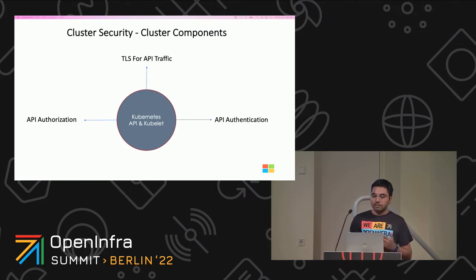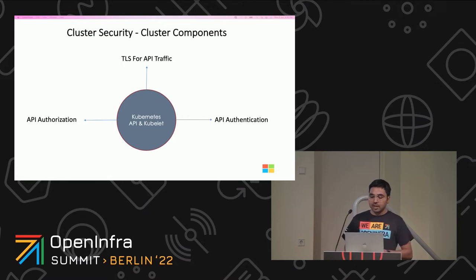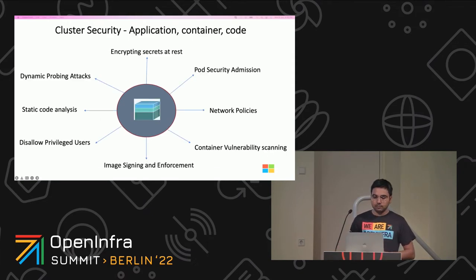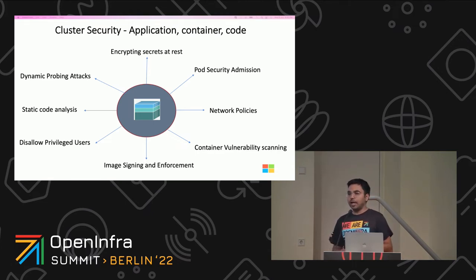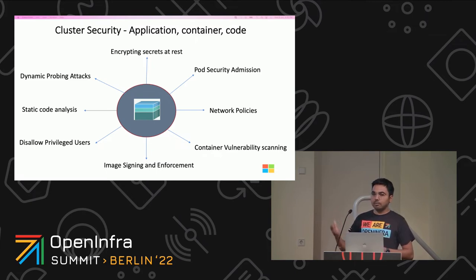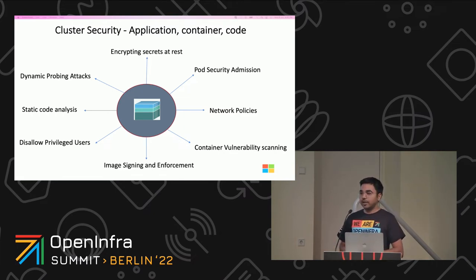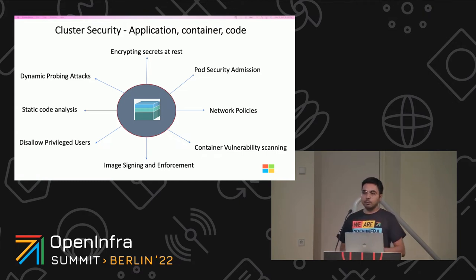Once authenticated, every API call is also expected to pass an authorization check. Kubernetes ships an RBAC component that matches an incoming user or group to a set of permissions bundled into roles. Simple and broad roles may be appropriate for smaller clusters, but as more users interact with a cluster, it may become necessary to separate teams into separate namespaces with more limited roles. These are some important things to consider within cluster security for application, container, and code — high priority items like encrypting secrets at rest, enabling pod security admission, enabling network policies, running tools for checking container vulnerability, image signing, disallowing privileged users, static code analysis, and dynamic probing attacks.